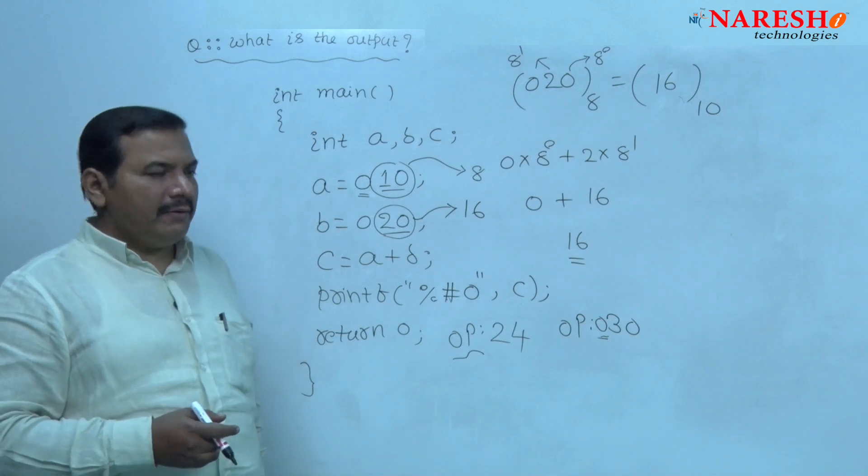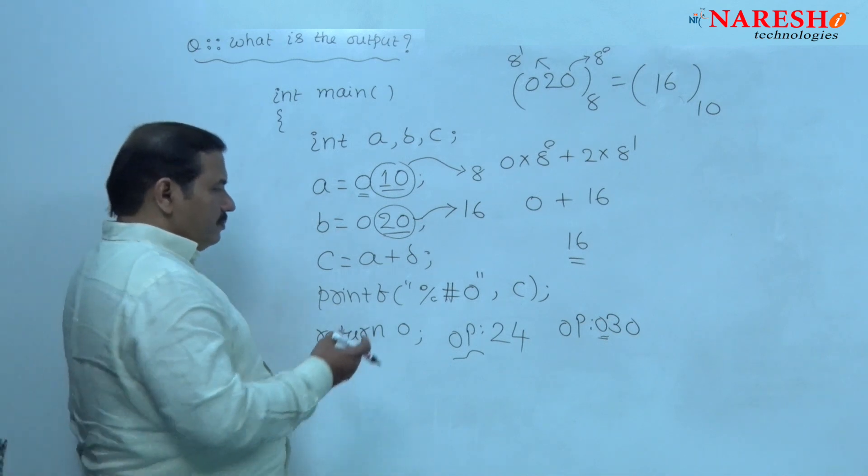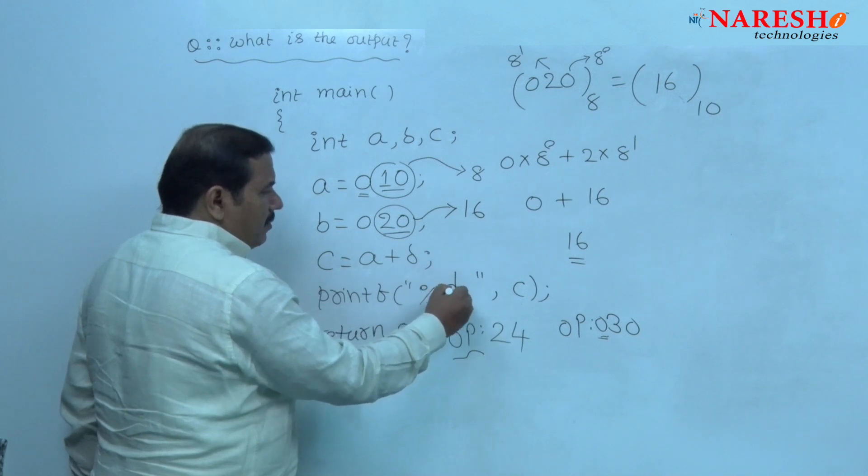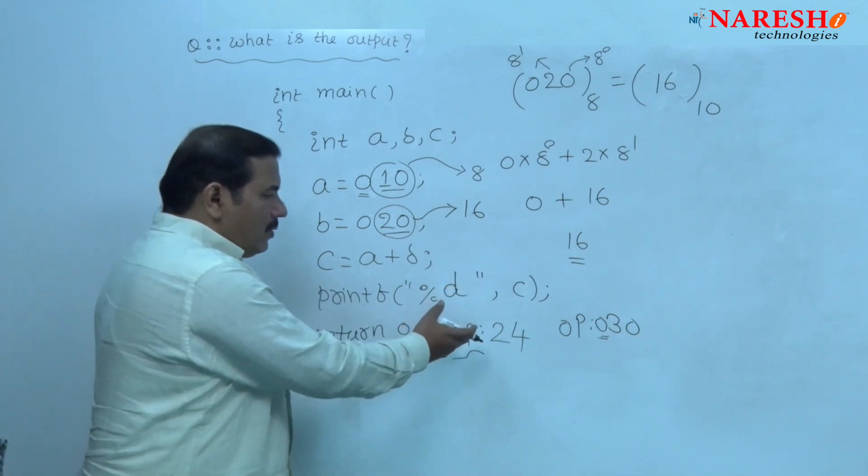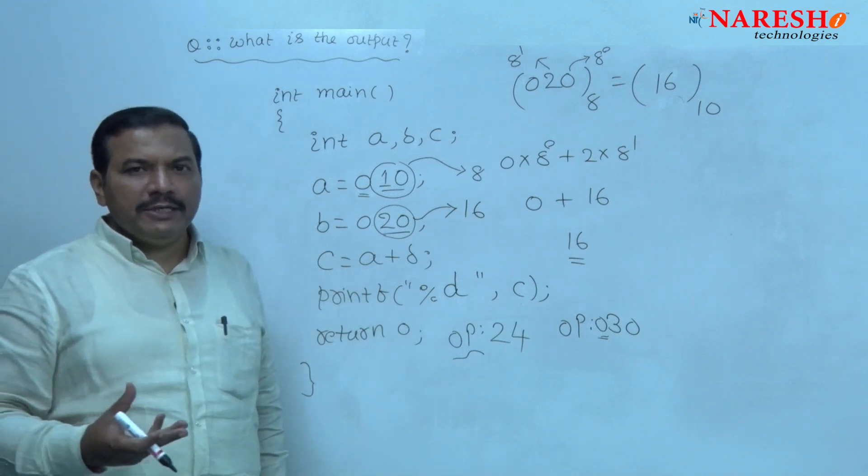But in the given question, the format code given is D. Hence, the output we will get onto the screen is 24.